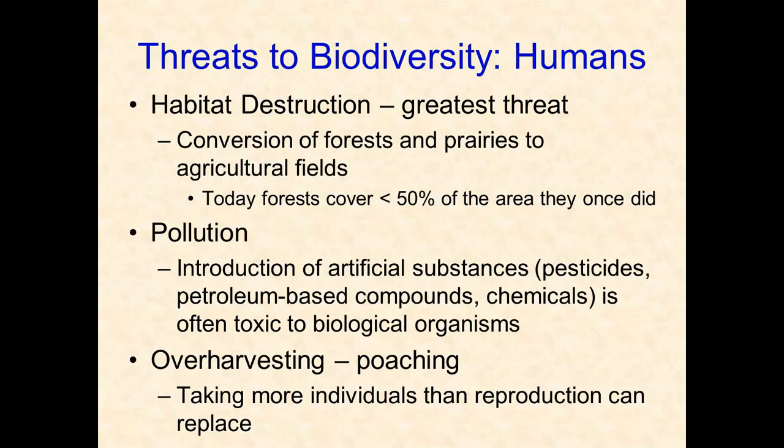Another part of over-harvesting is poaching — the illegal killing of protected animals. The Endangered Species Act places species on the brink of extinction on a protected list. Unfortunately, there is a black market for things like elephant tusks, tiger pelts, and rhino horns. Even though these animals are protected, people will still kill them because there's money to be made. Black markets can compel people to engage in illegal activities.